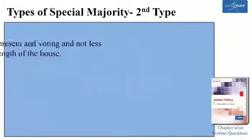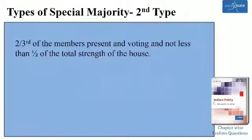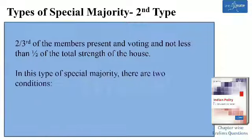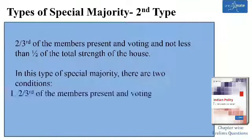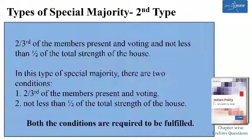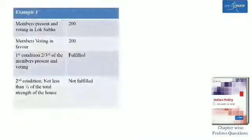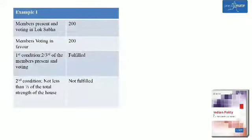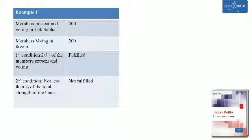Special majority of second type: two-third of the members present and voting and not less than half of the total strength of the house. In this type of special majority, there are two conditions. First, two-third of the members present and voting. Second, not less than half of the total strength of the house. Both the conditions are required to be fulfilled. Suppose 200 members are present and voting in Lok Sabha and all the members approve the resolution. In such a case, the first condition is fulfilled because more than two-third of the members present and voting have approved the resolution. The second condition remains unfulfilled because less than half of the total strength of the house approves the resolution.